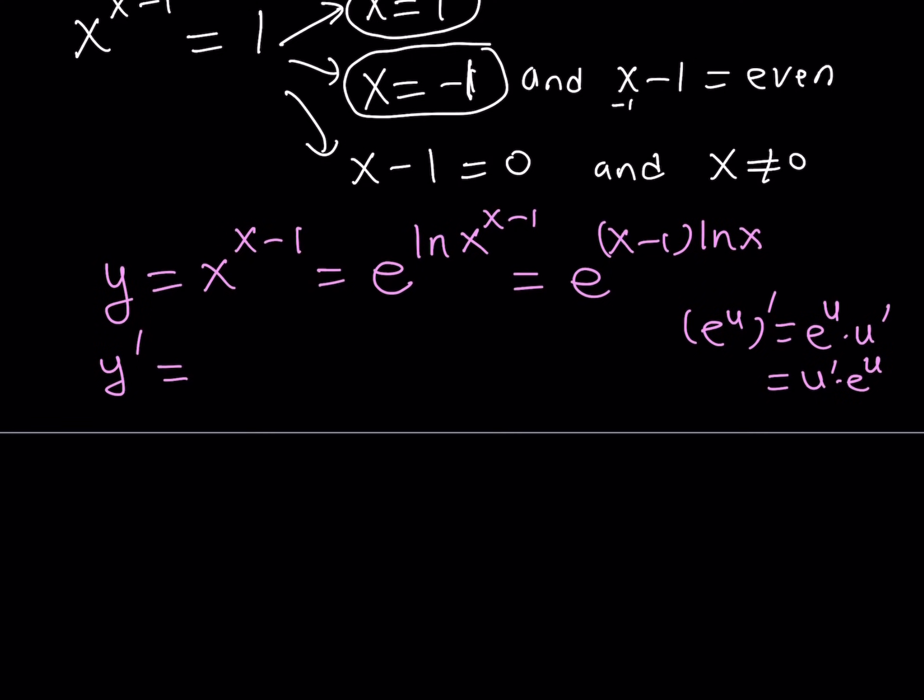I can do the u prime first and write it as u prime times e to the power u. So let's go ahead and do the u prime first. u is the exponent here, the derivative of x minus 1 times ln x. That's a product. So I'm going to use the product rule. And the product rule tells me that the derivative of x minus 1, which is 1, times the function itself, ln x, plus the derivative of ln x, which is 1 over x, times the first function, which is x minus 1.